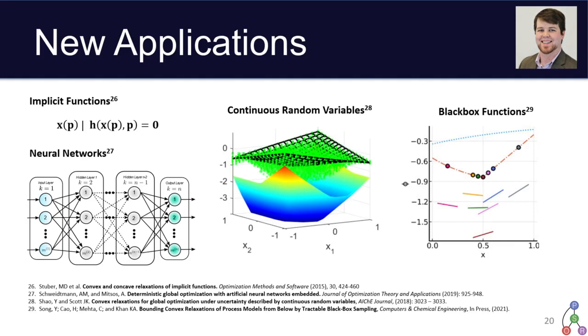We're fairly excited about extending this approach to other somewhat weird classes of functions that aren't really in the standard global optimization factorable function framework for modeling. So one of which is implicitly defined functions that are defined by some sort of nonlinear equality constraints. Neural networks are a great one that we're looking at further in the future. And more recently, there's been some work on bounding distributional properties of continuous random variables, as well as constructing convex concave relaxations of actual black box functions effectively.